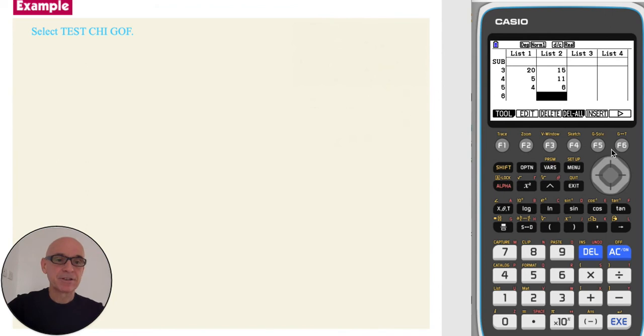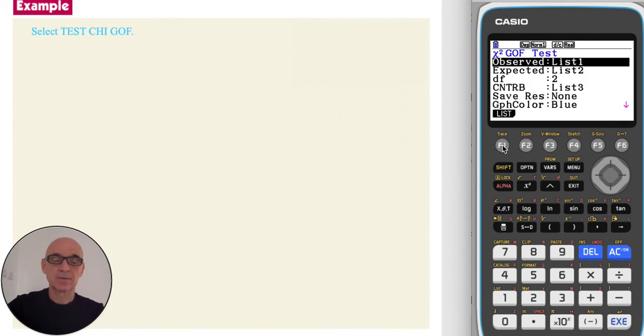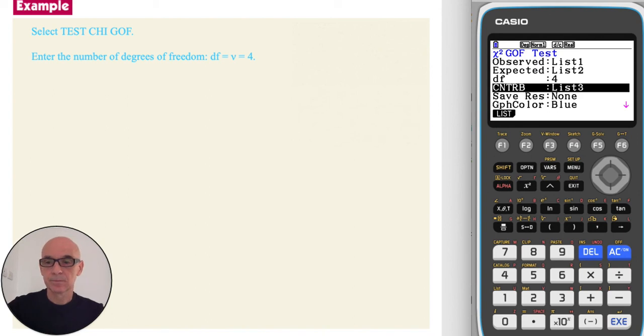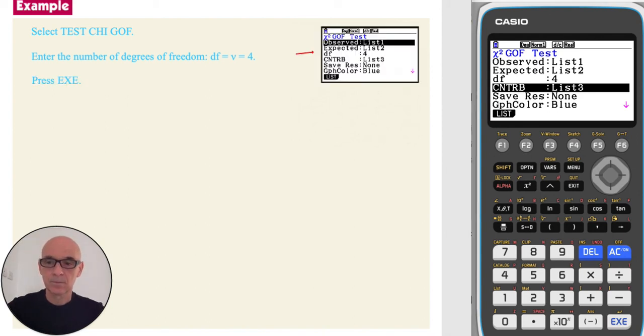In the calculator, pressing F6 twice to get back to the main statistics menu, selecting F3 for test, F3 again for a chi-squared test, and F1 for a goodness-of-fit test. Scrolling down and setting the degrees of freedom to equal 4, pressing execute, and pressing execute again to perform the test.